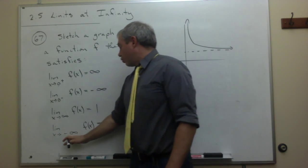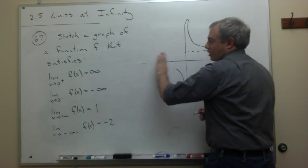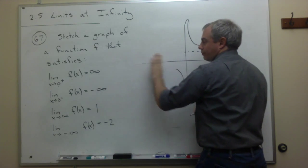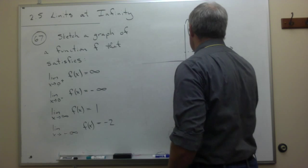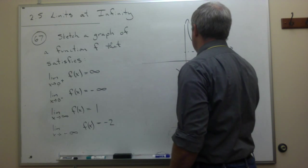Also, it says as x goes out towards negative infinity, so as I go out this direction with my x's, then I'm getting close to negative 2. So here's negative 1, here's negative 2.